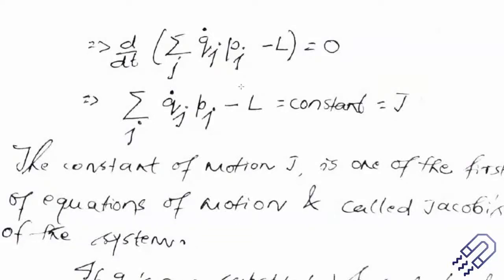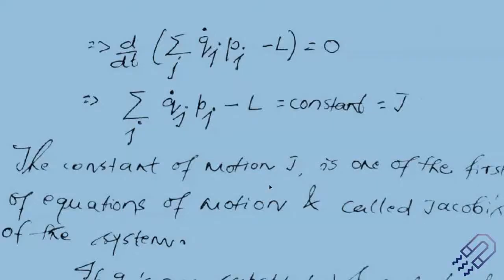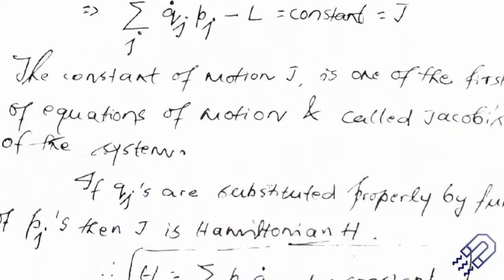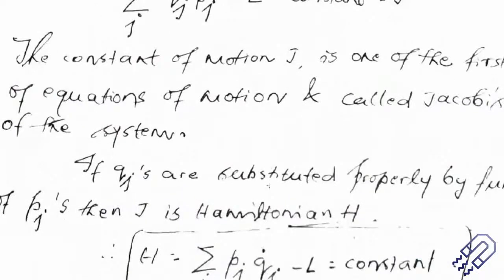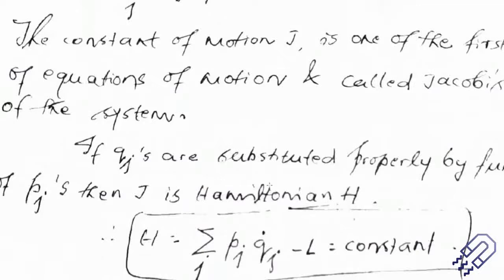Suppose you are given a Lagrangian and want to find the Hamiltonian. You can identify the generalized coordinates and put them appropriately in the Jacobi integral equation to find the Hamiltonian directly. This makes things simpler. There are problems based on this which we are going to do, but we begin with a simple example to build understanding.